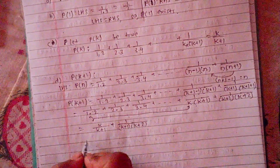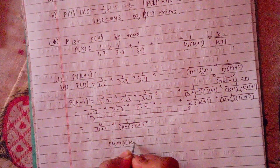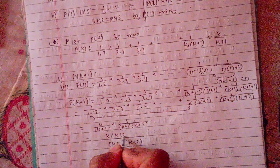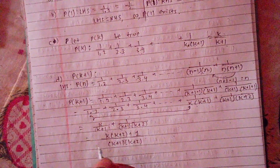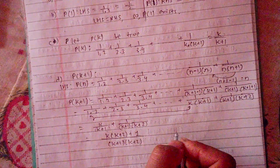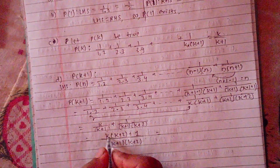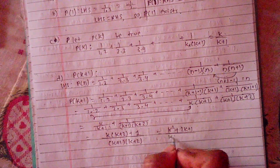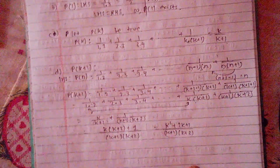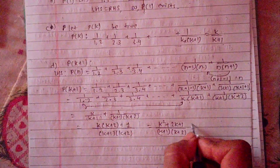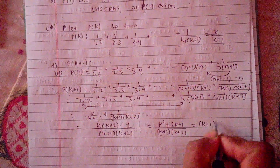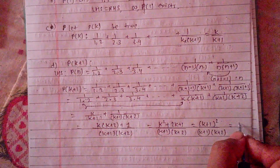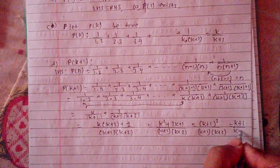The LCM here is (k+1)(k+2). We multiply and simplify: k(k+2) + 1 over (k+1)(k+2), which gives (k+1)^2 over (k+1)(k+2), simplifying to (k+1)/(k+2). This equals the LHS.